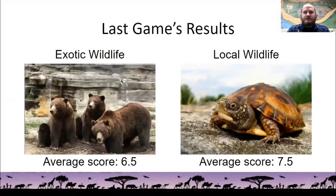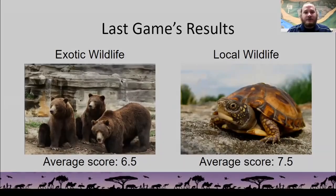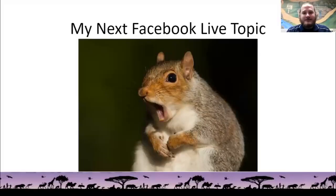And here were the scores. As you can see, the Exotic Wildlife team did a great job. Average score of 6.5. The local wildlife team did a little bit better, though. An average score of 7.5. So, my next Facebook Live topic will be the communication system of the Eastern Gray Squirrel. I will share everything there is to know about squirrel communication, and hopefully you will be amazed by it all.